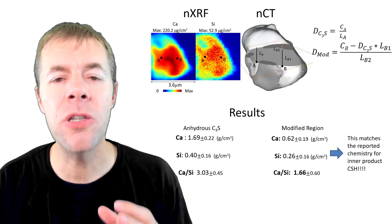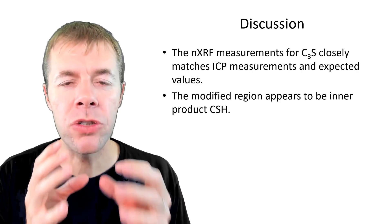It seems to have a calcium to silicon ratio of about 1.7. It's very cool. The Nano XRF measurements for the unhydrated C3S is exactly what we'd expect them to be. And this modified region seems to be what some people call inner product CSH.